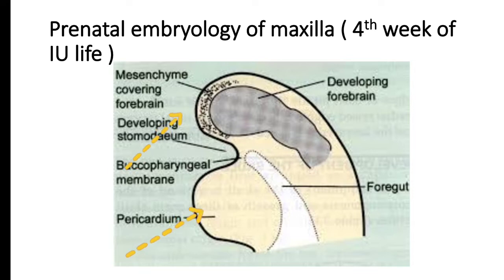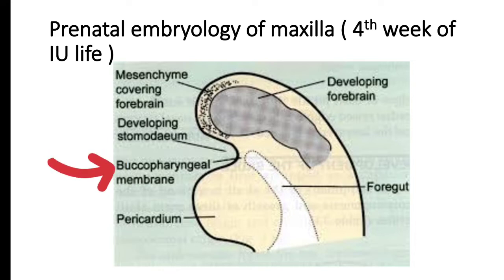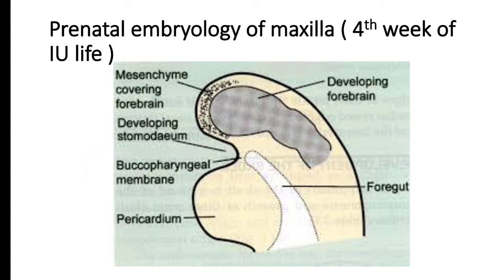In this image you can see there are two bulges. One is the mesenchyme covering the forebrain — the grayish portion is our developing forebrain — and there is a depression in between these two bulges. The lower bulge is the pericardium and the depression is the developing stomatodium, which is our primitive oral cavity. The floor of this stomatodium is formed by the buccopharyngeal membrane, which separates the developing stomatodium from the foregut.